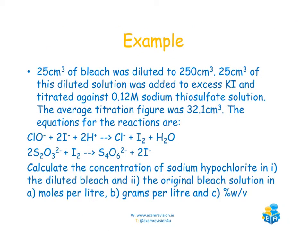Let's try a calculation. 25 cm³ of bleach is diluted to 250 cm³, so the dilution factor is 10. Then 25 cm³ of this diluted solution was added to excess potassium iodide and titrated against a 0.12 molar sodium thiosulfate solution. The average titration figure was 32.1 cm³.